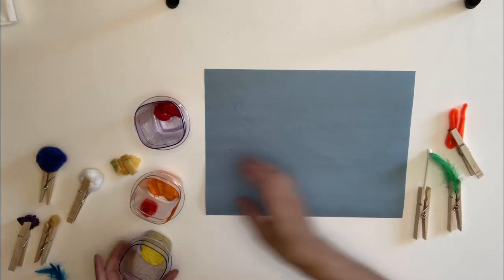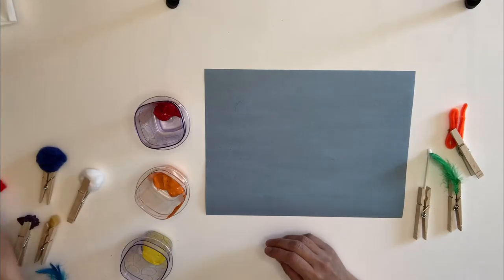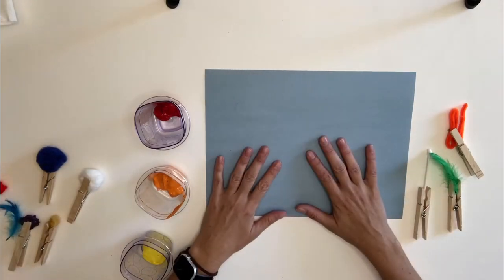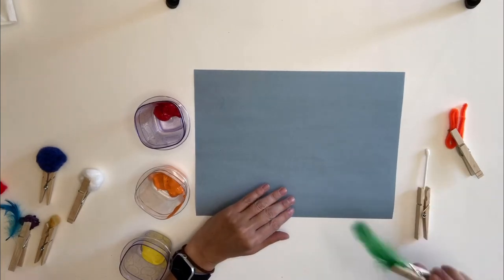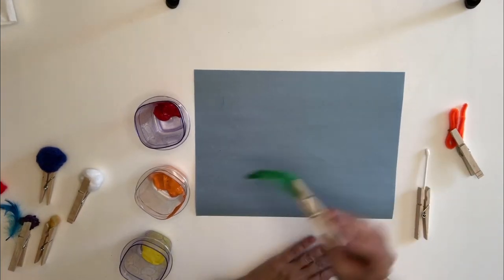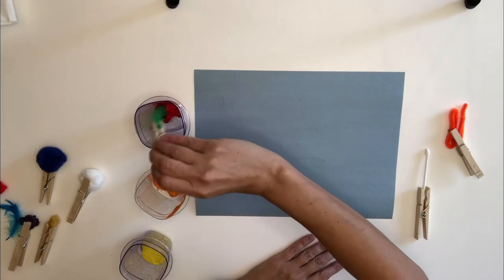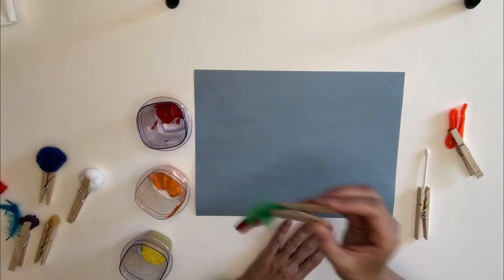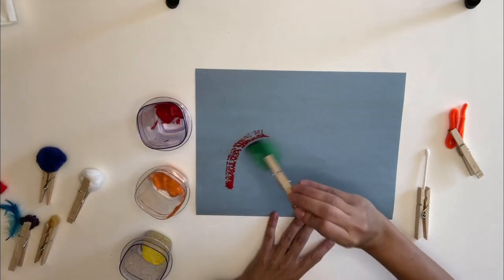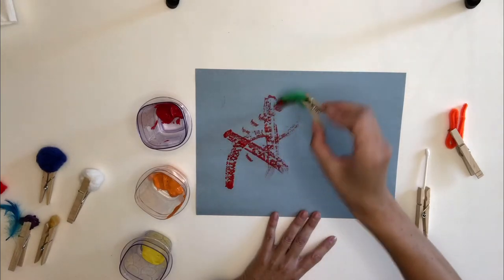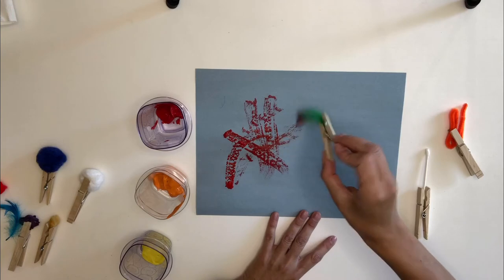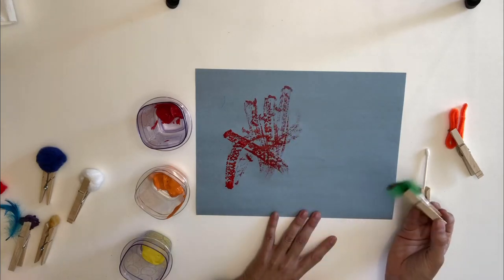Now, you can do this however you would like. And since we're all using different materials, everybody's painting is gonna look a little different. So I'm gonna start with my feather, and I'm gonna see what it looks like. I'm gonna put it in the red paint, and I'm gonna start painting with it. It makes an interesting texture. It's kind of bumpy. It almost looks like train tracks, huh?